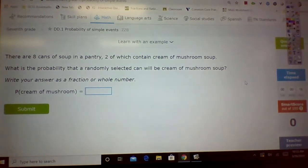There are eight cans of soup in a pantry, two of which contain cream of mushroom soup. What is the probability that a randomly selected can will be cream of mushroom soup? First, let's write what we have up here. How many total cans we have go on the bottom. The bottom is the total. Top is what you're looking for.